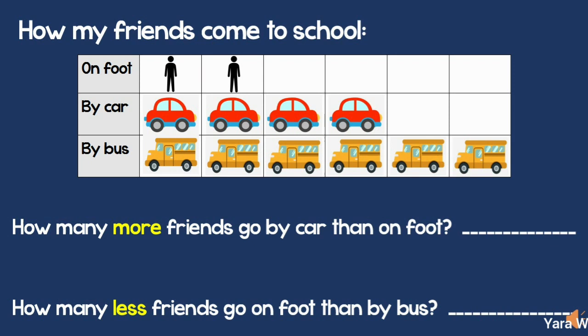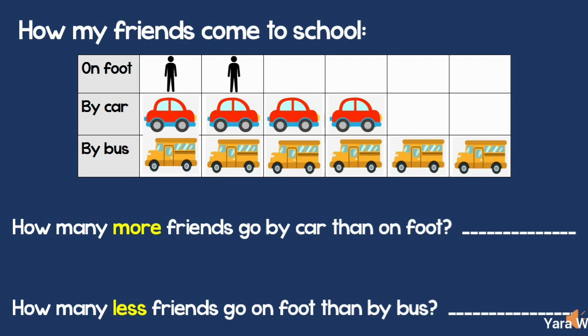Let's try another graph. In this graph, I'm showing how my friends come to school. 2 friends come on foot, 4 friends come by car, and 6 friends come by bus.